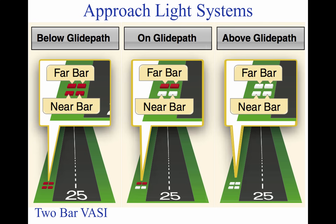Approach light systems are primarily intended to provide a means to transition from instrument flight to visual flight for landing. The system configuration depends on whether the runway is a precision or non-precision instrument runway. Some systems include sequenced flashing lights, which appear to the pilot as a ball of light traveling toward the runway at high speed. Approach lights can also aid pilots operating under VFR at night.